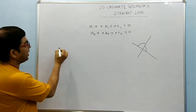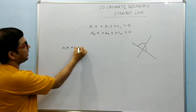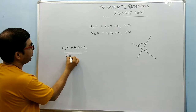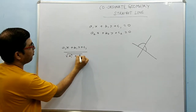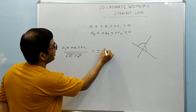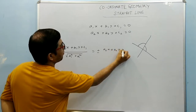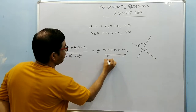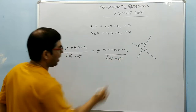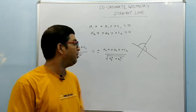The equation of two angle bisectors is written using a simple technique: take the first line equation a1x plus b1y plus c1, divide it by the square root of a1 squared plus b1 squared, and set it equal to plus or minus the second line a2x plus b2y plus c2 divided by the square root of a2 squared plus b2 squared. From that we get the equations of the two angle bisectors.